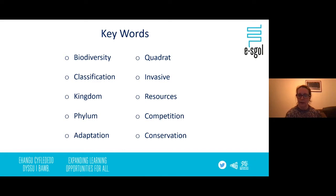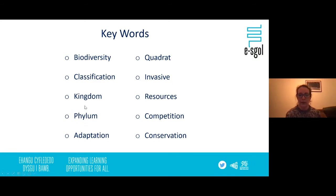Let's have a look at our key words for this unit. Biodiversity and classification — classification means putting things into groups and it's a really important concept within biology. Kingdom and phylum are two very important groups within classification and there are five different kingdoms. Adaptation means how an animal has a special feature that enables it to live within a particular environment and makes that animal successful — for example, a polar bear has certain adaptations that make it successful in its environment.